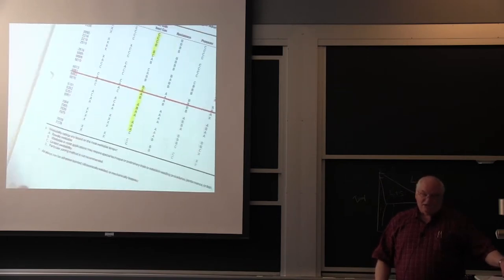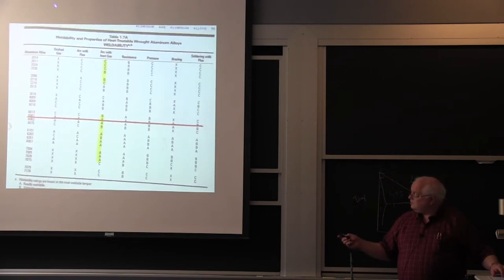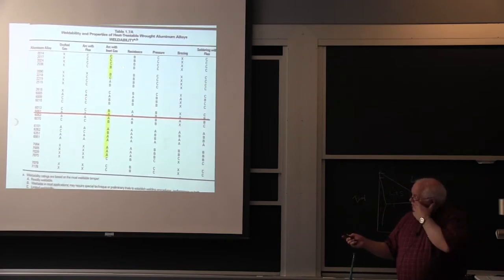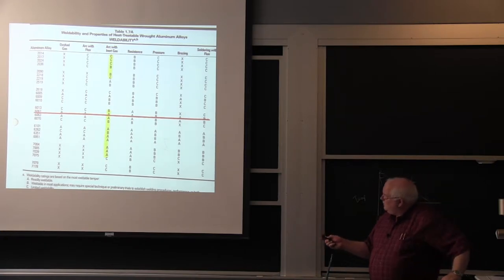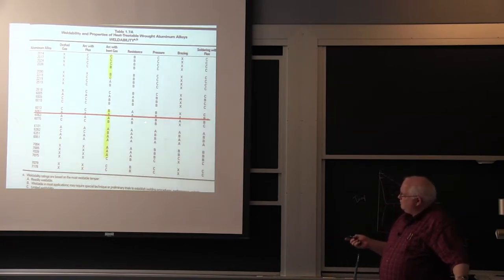I wouldn't say you couldn't do it but you're gonna have all kinds of problems. So if you look at the 2000 series, the best any of them do except 2219 or 2218, is like arc welding with an A but everything else is B and C. If you go here at 6061, whether you're talking about oxyacetylene or arc with flux or arc with inert gas, it's good for everything. It's got a B for pressure welding and B for soldering but aluminum is extremely difficult to solder. That's a rule.